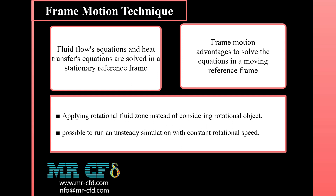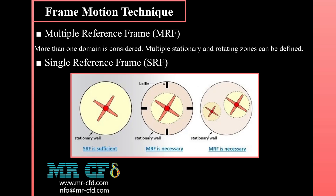For a steady rotating frame, meaning that the rotational speed is constant, it is possible to transform the equations of fluid motion to the rotating frame such that a steady state solution is possible. It should also be noted that you can run an unsteady simulation in a moving reference frame with constant rotational speed — for example, to simulate vortex shedding from a rotating fan blade. The frame motion technique is categorized into two submodels: SRF and MRF.